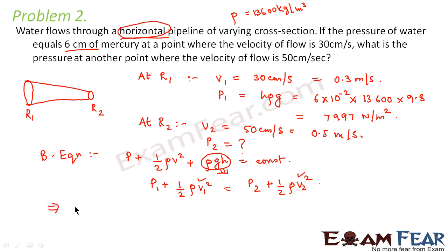So just put the value of P1 which is 7997 plus half into rho. What is rho? In this case, rho is the density of the fluid which flows, right? So which is the fluid that is flowing?